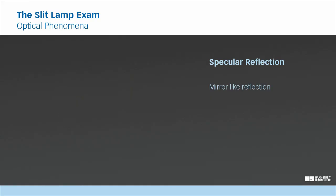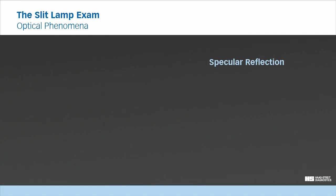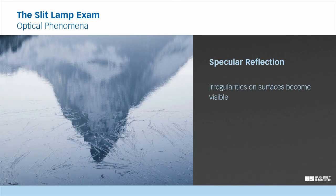This can be observed when a landscape is reflected in a lake which has a smooth surface. Irregularities in this mirror-like surface disturb the reflection and thus become easily visible.